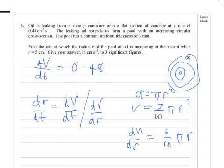And we just substitute that in, so I'd need a calculator at this point. But dV/dt, 0.48 divided by 6/10 π times r, and we're told r is 5, so it's that calculation.